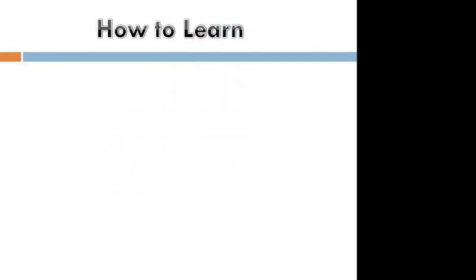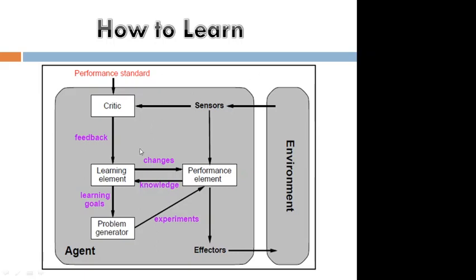How to learn? Coming to the basic agent diagram. This is an agent in an environment. The agent observes the environment by using sensors. Based on the environment status, the performance element does some actions based on the problems, using prior knowledge. The learning element collects feedback from the critic.